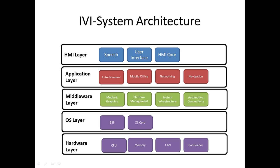The next layer is the middleware layer. It consists of components and interfaces in software that supply services to the application that are not available from the OS layer, so that the functionality of the application layer can be realized. The middleware layer simplifies the communication and input/output of data between the application layer and the OS layer, allowing application developers to focus on their particular purpose and functionality. Basically, the middleware layer acts as a middleman between the application layer and the OS layer.